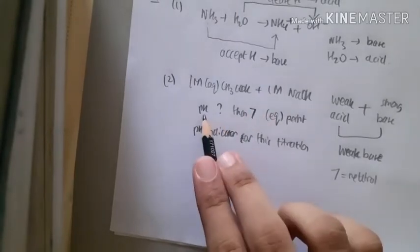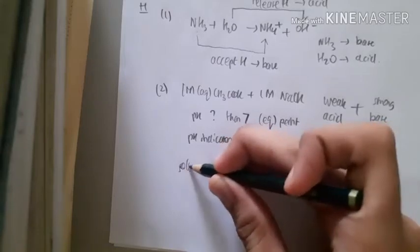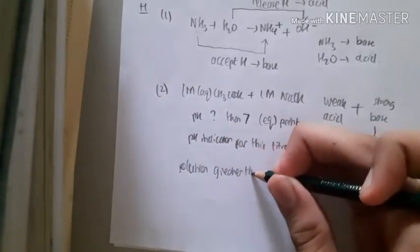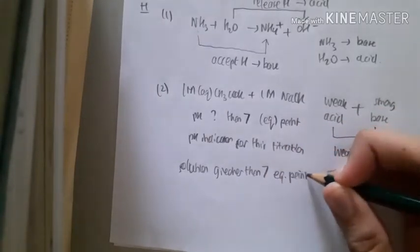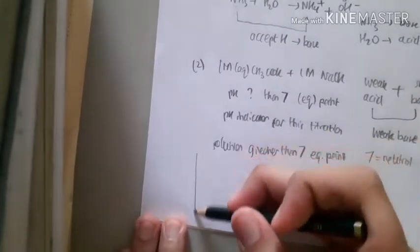Therefore, the solution becomes greater than 7. So the answer is solution greater than 7 in equivalent point. Now, what it means to have equivalent point? This has to do with the titration curve.